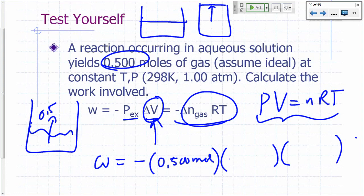RT is 0.08206, remember your R from ideal gas law, liter atmosphere per mole per Kelvin, times what's our temperature, 298 Kelvin.